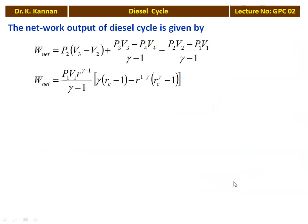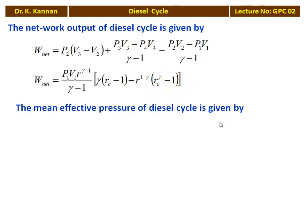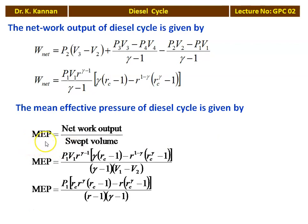The net work output of the Diesel Cycle is derived from the area under the PV diagram: W_net = P2(V3 − V2) + [P3V3 − P4V4]/(gamma−1) − [P2V2 − P1V1]/(gamma−1). Simplifying: W_net = P1V1 · R^(gamma−1) / (gamma−1) · [gamma·R_C − 1 − R^(1−gamma) · (R_C^gamma − 1)]. The Mean Effective Pressure (MEP) = net work output / swept volume. Substituting and simplifying: MEP = P1 · [gamma·R·R_C^gamma·(R_C − 1) − R·(R_C^gamma − 1)] / [(R − 1)(gamma − 1)].